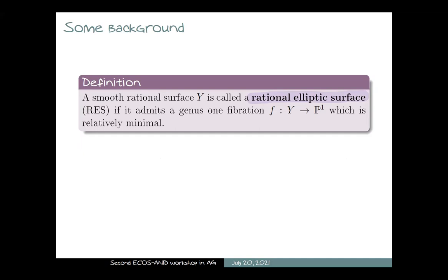Let's start with the first definition. In this talk, a rational elliptic surface is a smooth rational surface Y, together with a fibration to P1, such that the generic fiber is a smooth curve of genus one. Moreover, we assume this is relatively minimal, meaning there are no minus-one curves in any fiber. Note that I am not assuming there is a section.